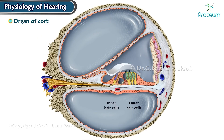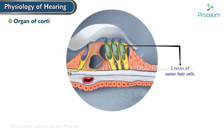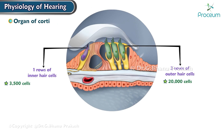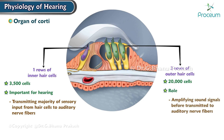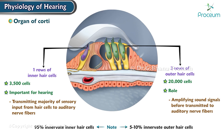The hair cells in the organ of Corti are arranged in four rows, with three rows of outer hair cells and one row of inner hair cells. The outer hair cells are more numerous, with about 20,000 cells, while the inner hair cells number only around 3,500. Despite being fewer, the inner hair cells are more important for hearing, as they transmit the majority of sensory input to the auditory nerve fibers. The outer hair cells play a critical role in amplifying sound signals. 95% of sensory neurons innervate the inner hair cells, while only 5-10% innervate the outer hair cells.